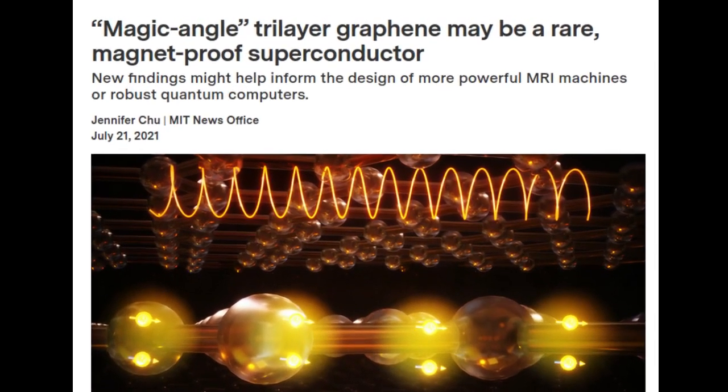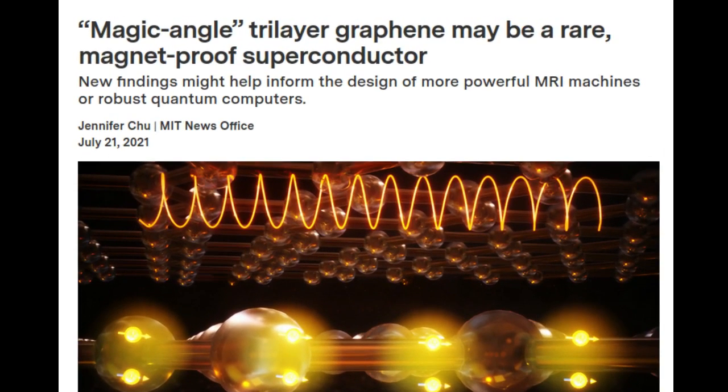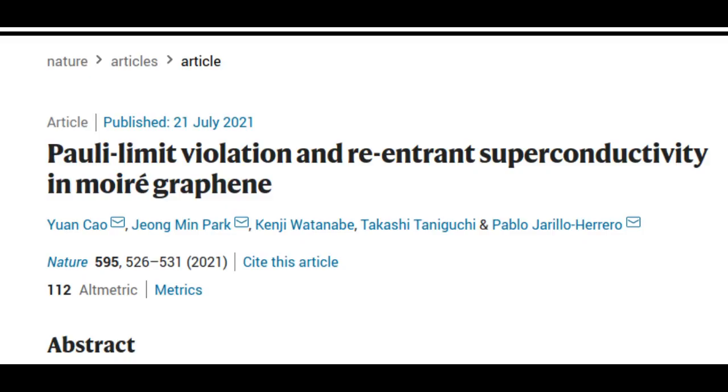MIT physicists have observed signs of a rare type of superconductivity in a material called magic-angle twisted tri-layer graphene. In a study appearing in the journal Nature, the researchers report that the material exhibits superconductivity at surprisingly high magnetic fields of up to 10 Tesla.